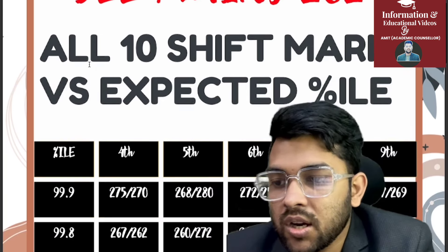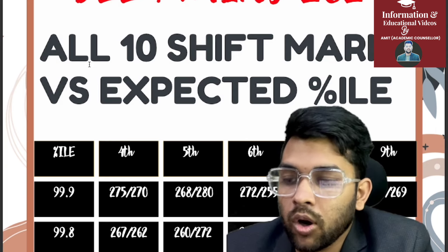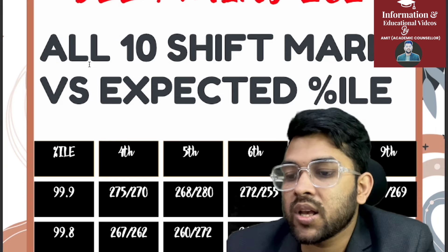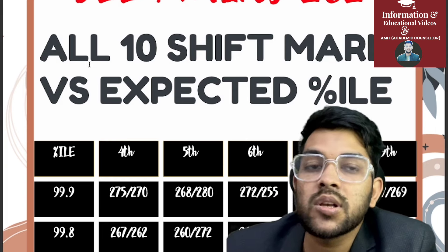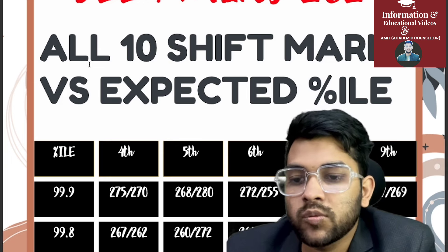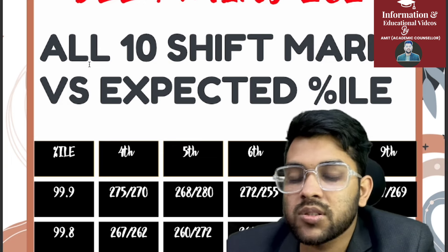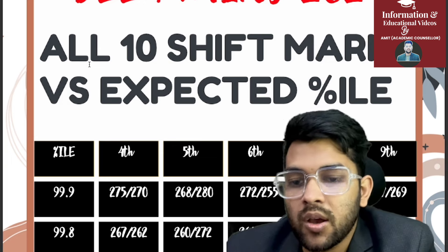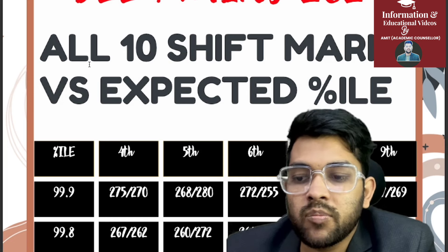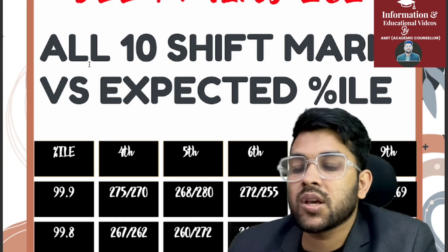Let's get started with the video. For the data format: before the slash it is for the first shift, after the slash it is for the second shift of the same day. The days are 4th, 5th, 6th, 8th, and 9th April — five days of examination with first and second shifts. Before slash is first shift, after slash is second shift.